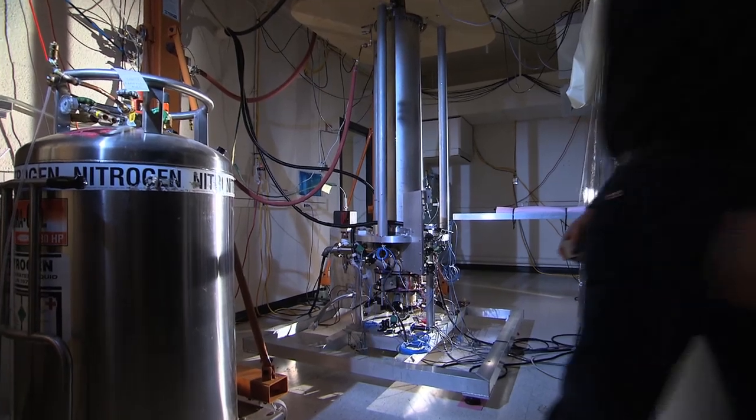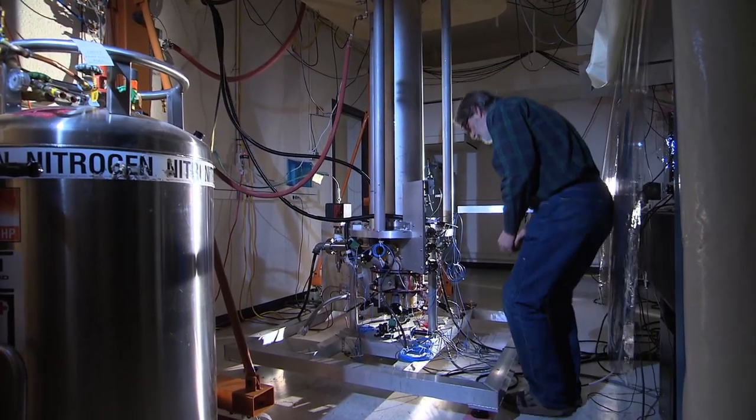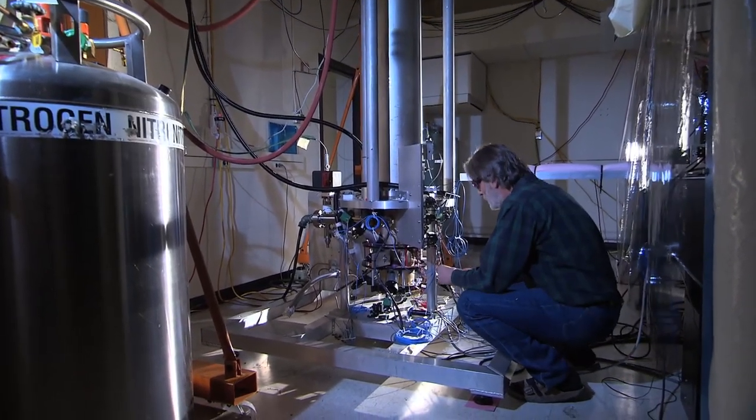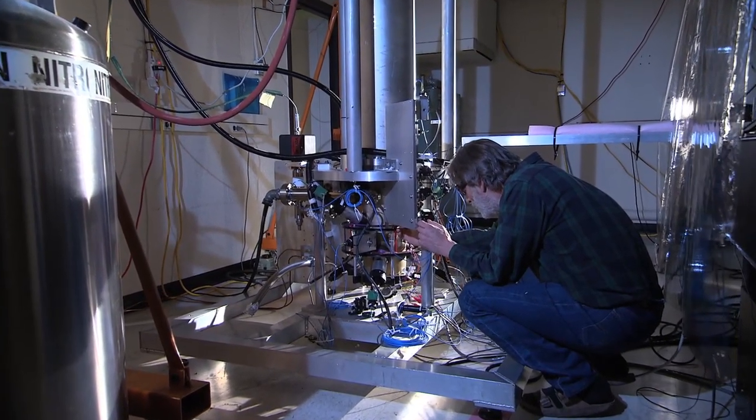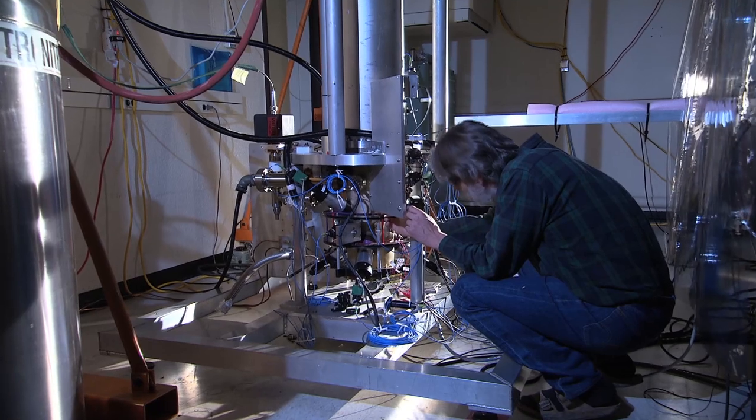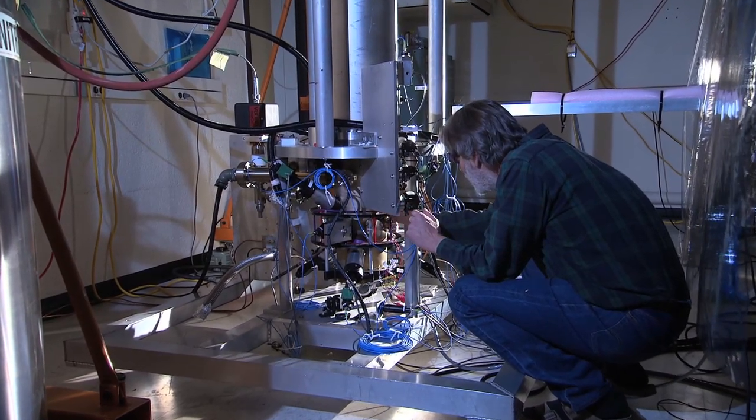NIST's new atomic time standard, the F2 fountain clock, is the most accurate clock of its kind in the world. If NIST F2 ran continuously for 300 million years, it would not stray from perfect time by one second.